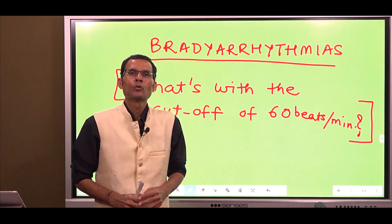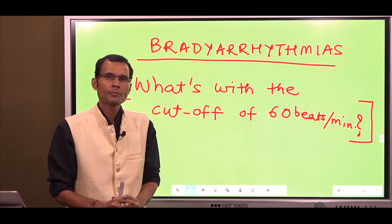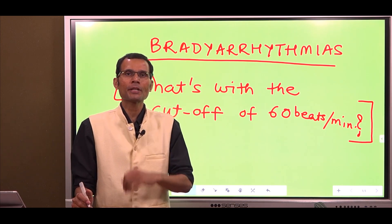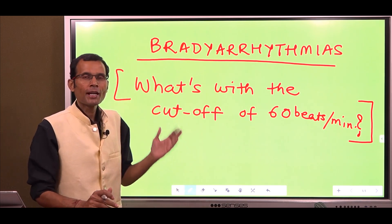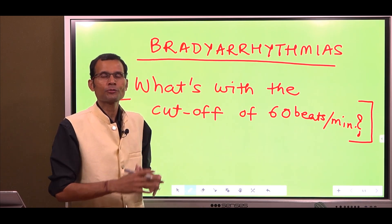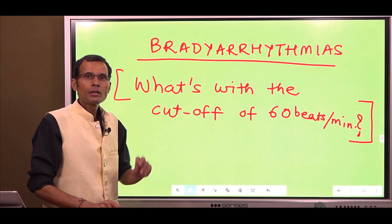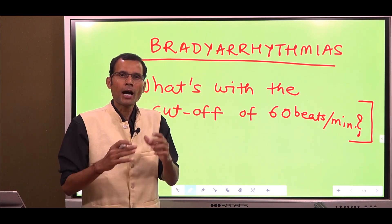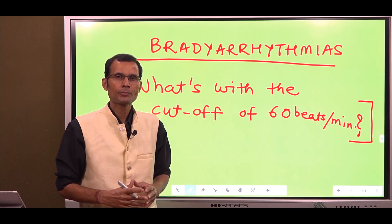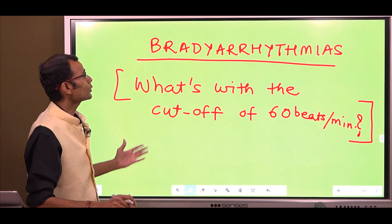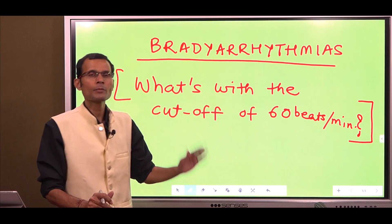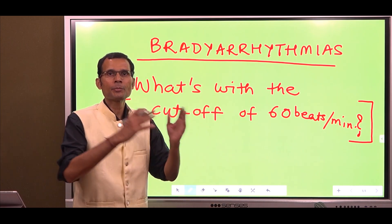Hello friends. What is the definition of bradycardia? The heart rate below 60 beats per minute. Now why is this cutoff line of 60? What's with this 60 beats per minute as a cutoff? Let's try to understand. Bradycardia — heart rate below 60 beats per minute — has arrhythmogenic potential, and is sometimes referred to as bradyrhythmias, bradyarrhythmias, or bradycardia arrhythmias.